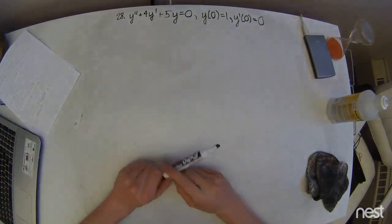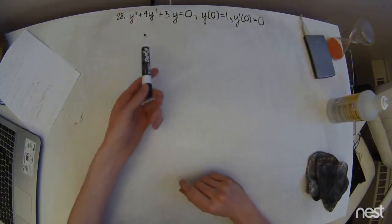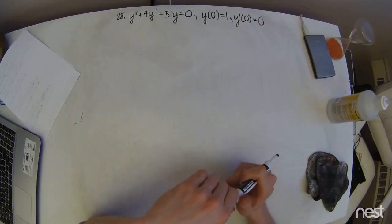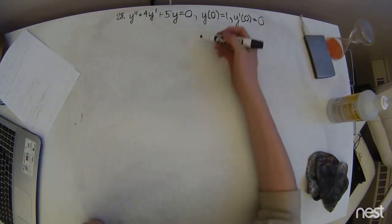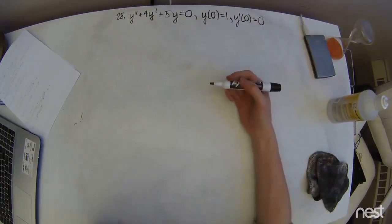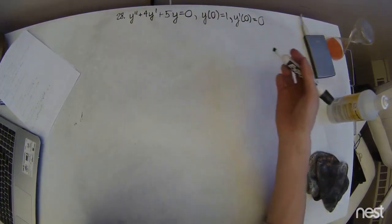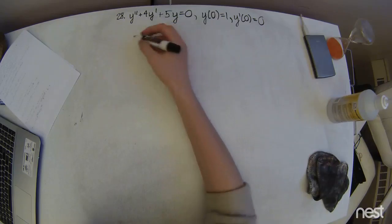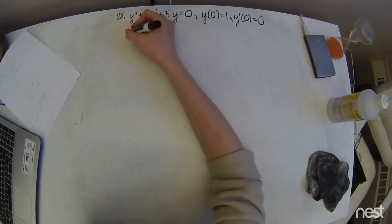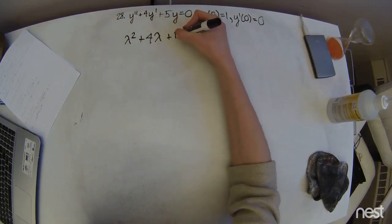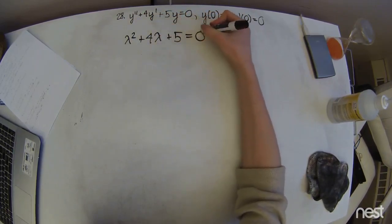Alright, so here we have another second order homogeneous ODE, and we don't have to worry about any particular solutions for the function of t that might appear on the other side. We're going to set up the characteristic equation using the coefficients from each of these. So we have lambda squared plus 4 lambda plus 5 equals 0.